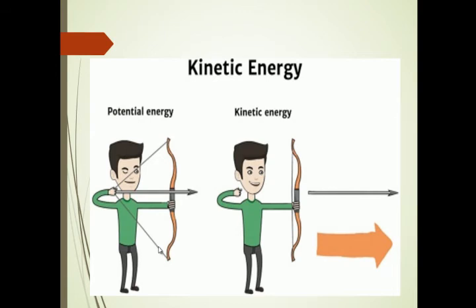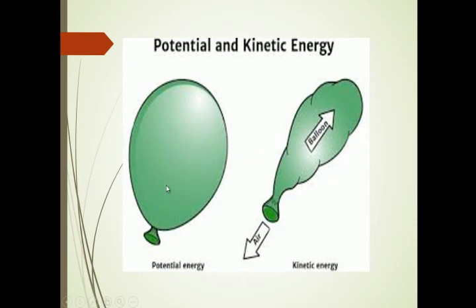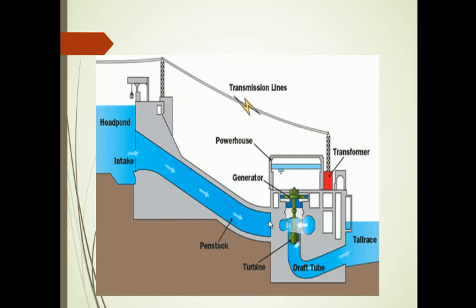Here you can see examples of potential energy and kinetic energy. Here is an arrow — due to its position it has potential energy. When released, it has kinetic energy; the potential energy converts into kinetic energy. Similarly, a balloon filled with air has potential energy; when you remove the air, the balloon moves forward, generating kinetic energy.